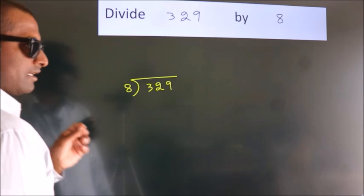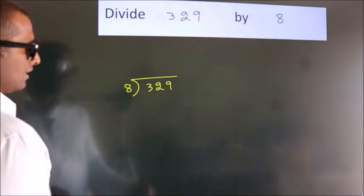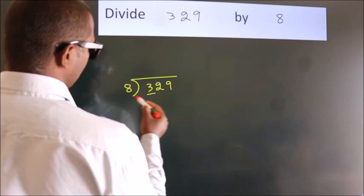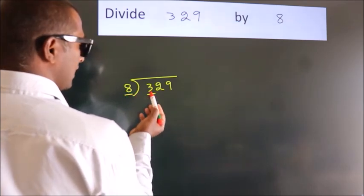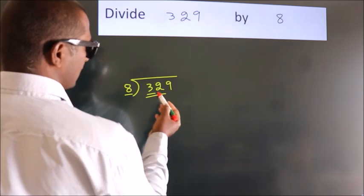This is your step 1. Next, here we have 3, here 8. 3 is smaller than 8, so we should take 2 numbers: 32.